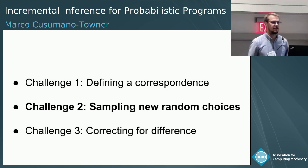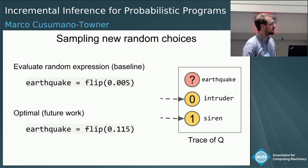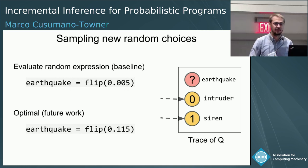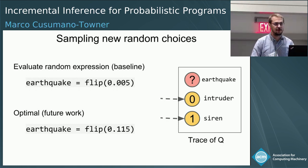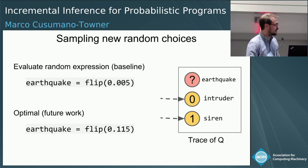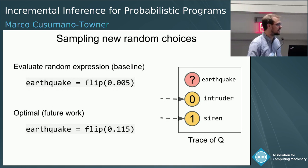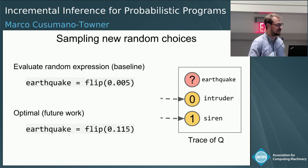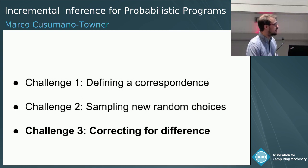The second problem is how to sample new random choices to fill in the trace. In this work we took a baseline approach where we just evaluate the random choice expression in the original program, sampling earthquake with probability 0.005. This isn't optimal in general — the optimal choice would be sampling with 0.115 probability. There is interesting future work in sampling new random choices from the optimal distribution, which is possible in certain cases.